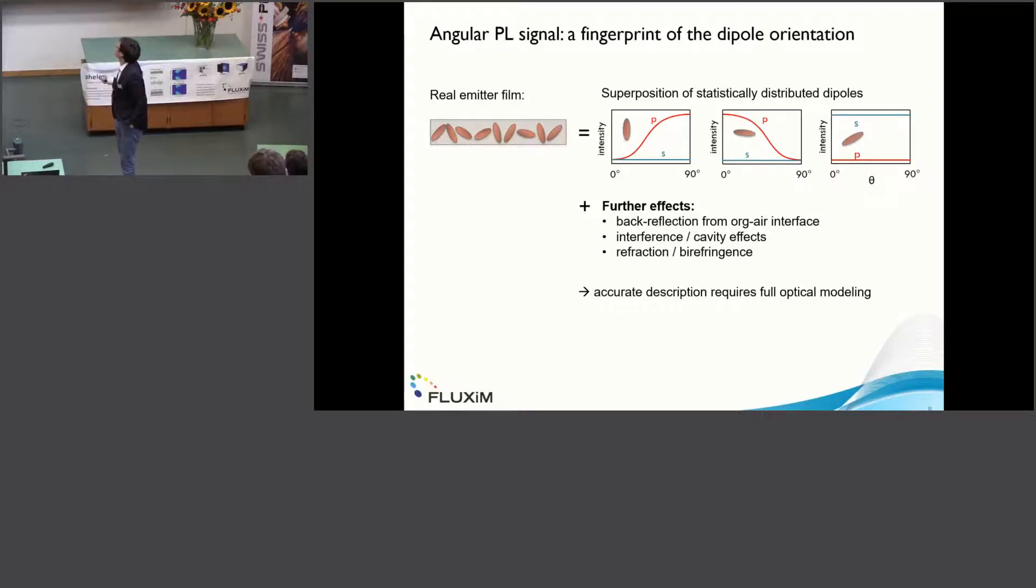However in a realistic case, in a realistic film, we have some superposition of many dipoles, and of course we will expect some superposition of these three very simple cases. Furthermore we have many effects like back-reflection because our detector is not sitting in the same medium as the dipoles itself. We will have some refraction, cavity effects, and birefringence. Therefore we need a full optical model in order to back-extract the dipole orientation.